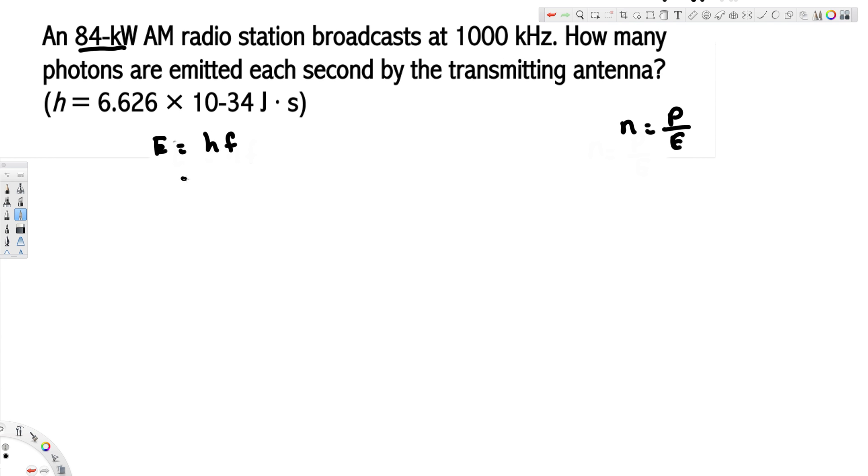This is going to be 6.626 times 10 to the power of minus 34, and a thousand kilohertz means a thousand times another thousand because of this kilo prefix, that's going to be another thousand. It's equivalent to 10 to the power of 6.